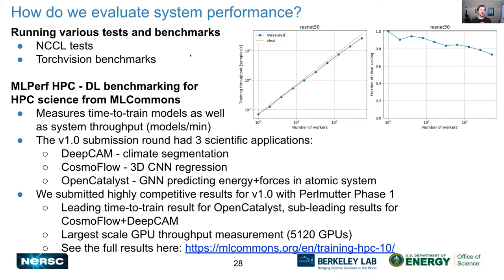To evaluate system performance, we run various functionality tests and benchmarks — things like NCCL tests to test all-reduce bandwidth. We also run unoptimized benchmarks, for example models straight out of PyTorch's TorchVision library. The plots shown are ResNet-50 scaling on Perlmutter with just synthetic data — no real I/O — and it shows that with a model that's not super optimized, you can get pretty decent scalability up to around 512 GPUs.